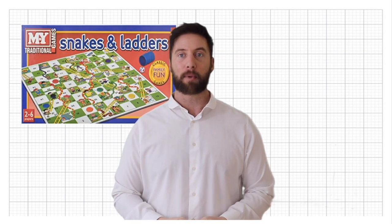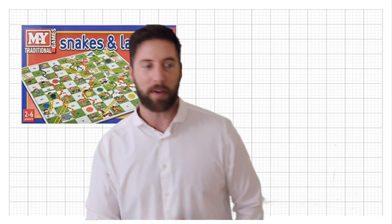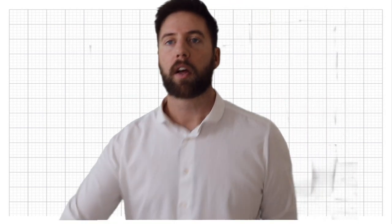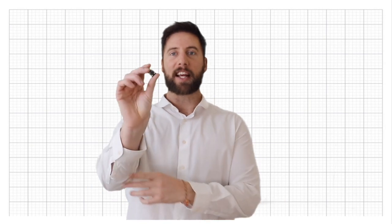Now I'm sure you're all very familiar with the game Snakes and Ladders. Now Snakes and Ladders is played with a dice. Let me show you one, let me go and get one. Here we go. So a die has 6 sides.